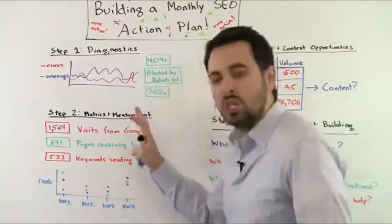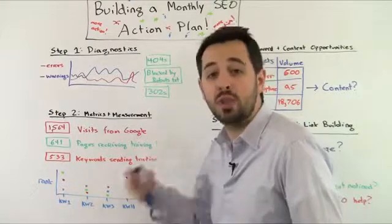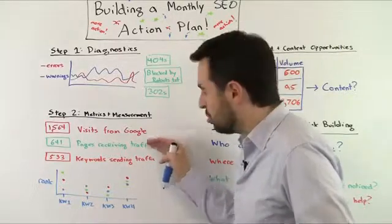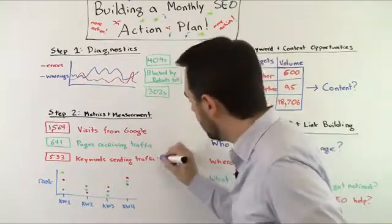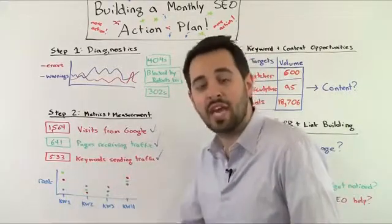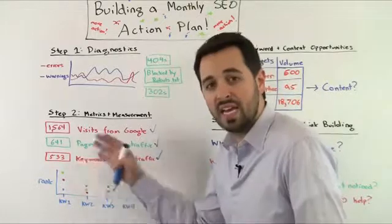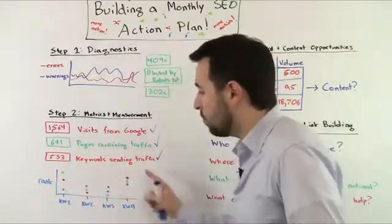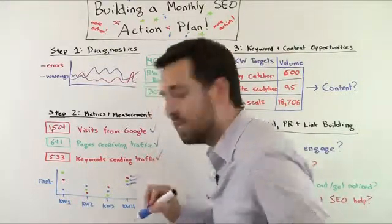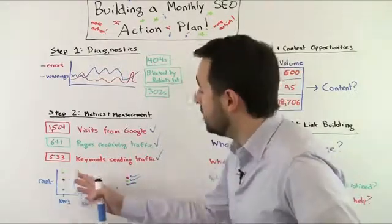Step two is collecting key metrics and measurements. This is probably a once-a-week check at a light level, with a deeper dive each month. At a top level, you're measuring visits from each search engine, the number of pages receiving traffic, the keywords sending that traffic, and comparing that to the last few months to see how your progress matches up against your goals. If SEO is a big part of what you're doing, are you hitting the numbers you want? You might also watch some rankings.